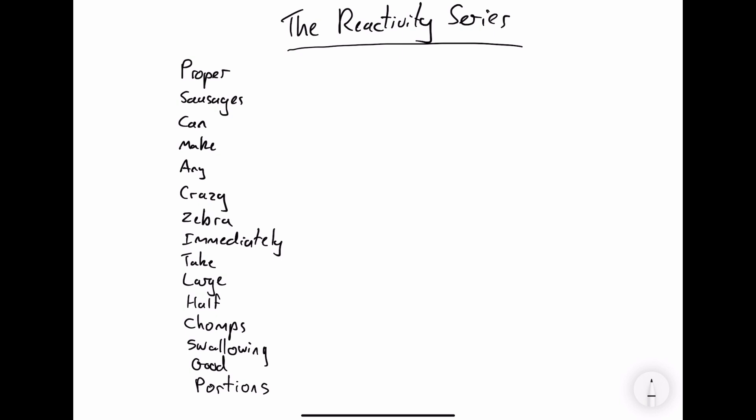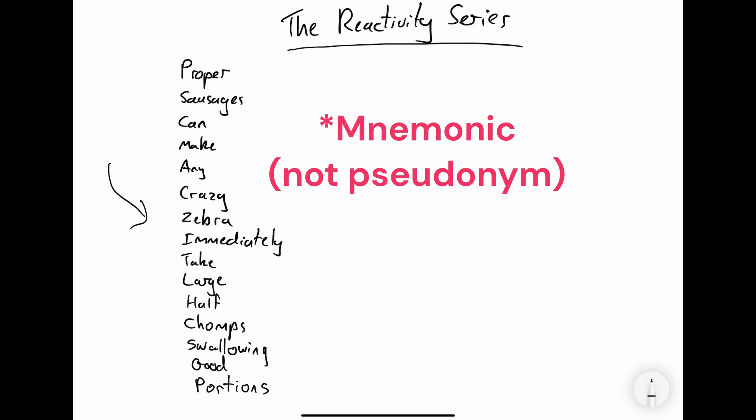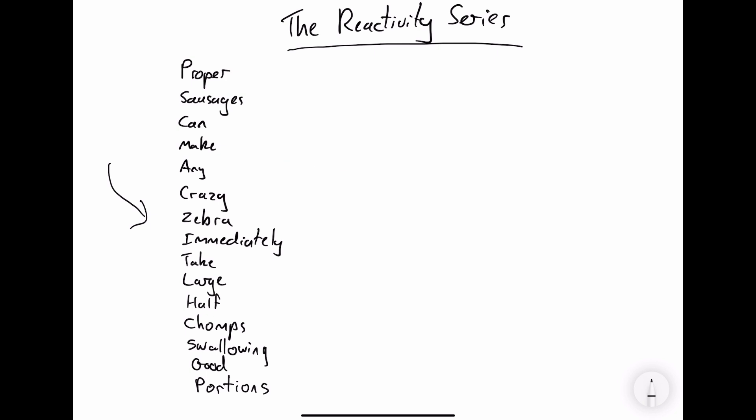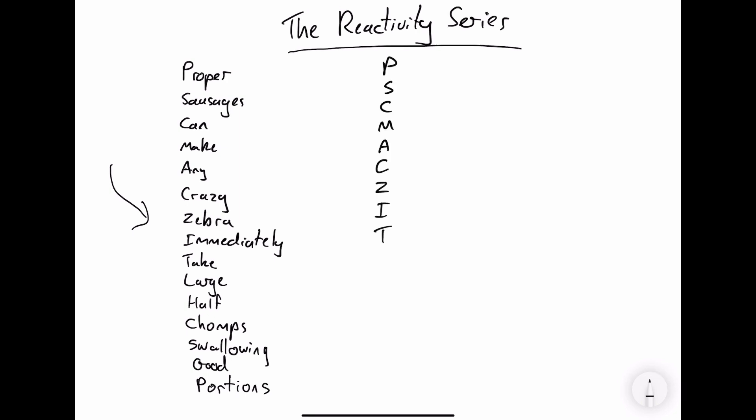We can use the reactivity series. This isn't the reactivity series itself — this is a mnemonic I use to remember the reactivity series. Each of the first letters of the words in the mnemonic represents an element. The reactivity series is ordered from most reactive at the top to least reactive at the bottom, and most of the elements in it are metals. Now I'll write the element that each letter represents.